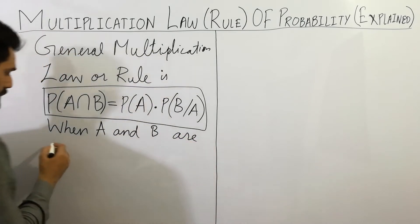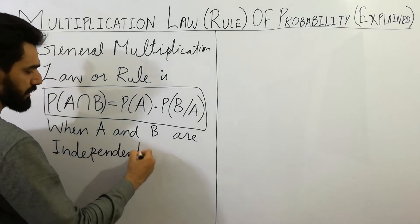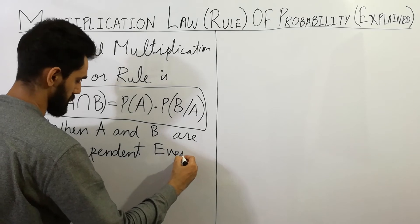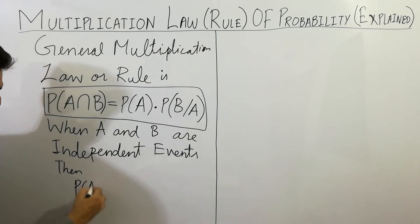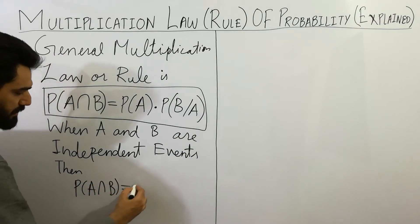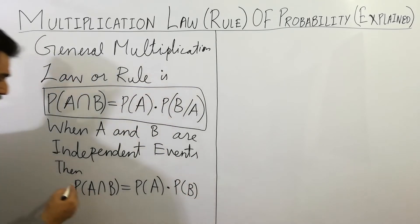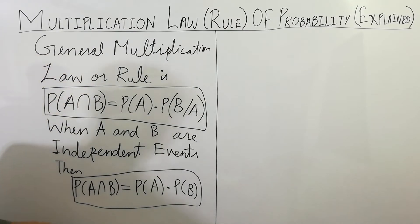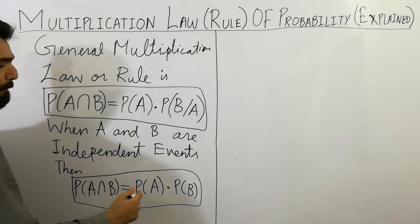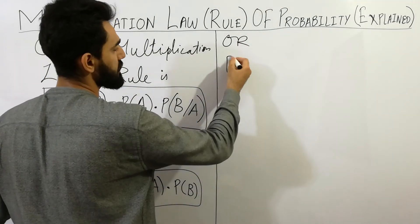When A and B are independent events, then the probability of A intersection B is always equal to probability of A multiplied by probability of B. When A and B are independent events, the general multiplication law will be: probability of A intersection B equals probability of A multiplied by probability of B.